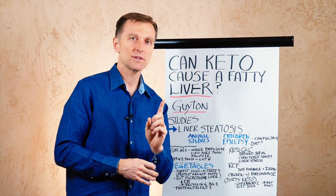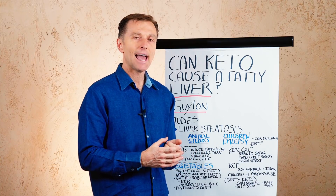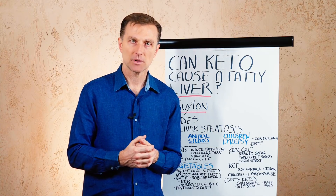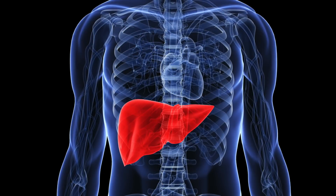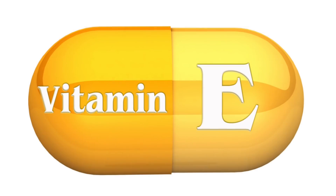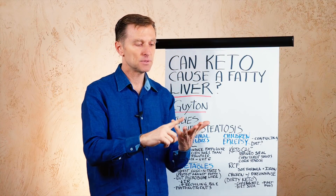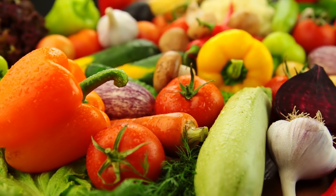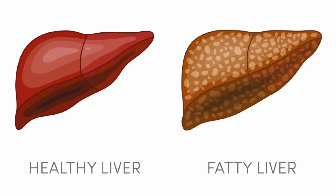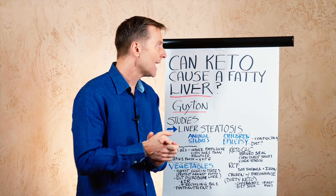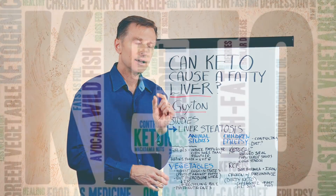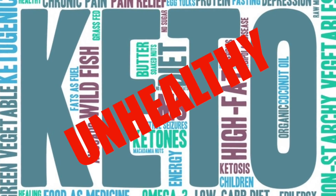Then you have phytonutrients — the things in vegetables that actually help protect tissues from damage; they're antioxidants. They can help detoxify chemicals and reduce inflammatory conditions in the liver. You also have other nutrients: vitamin C, vitamin E, and minerals like magnesium and potassium, which can help improve a high insulin state — and high insulin is actually the primary driver for fatty liver. So the question — can a ketogenic diet cause a fatty liver if you're not consuming enough vegetables? Potentially, I think it can, if you're doing an unhealthy version of keto.